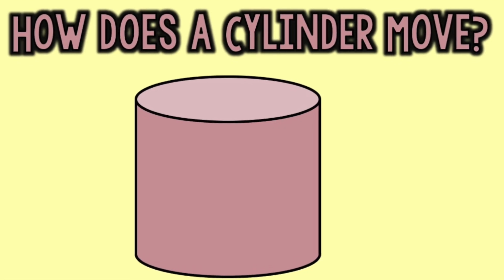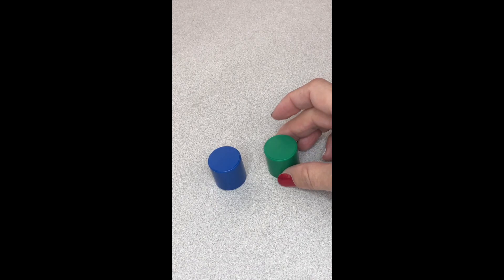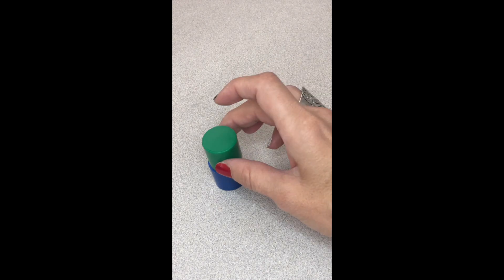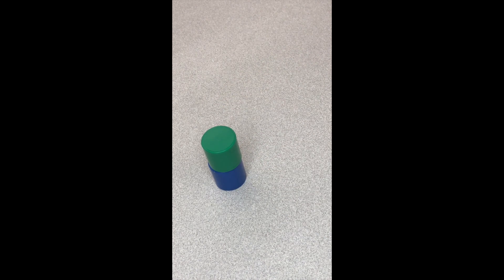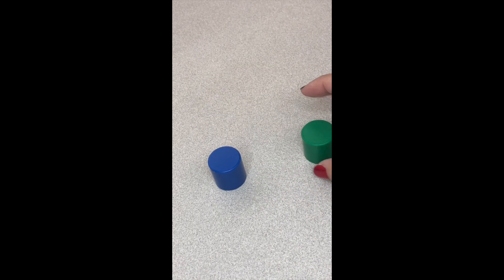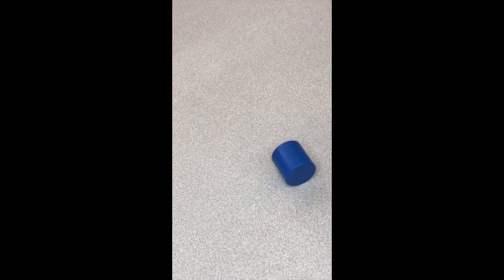How does a cylinder move? It has a flat face so I can stack it. It has a flat face so I can push it across the surface, and it has a curved face so I can roll it on a table or a flat surface.